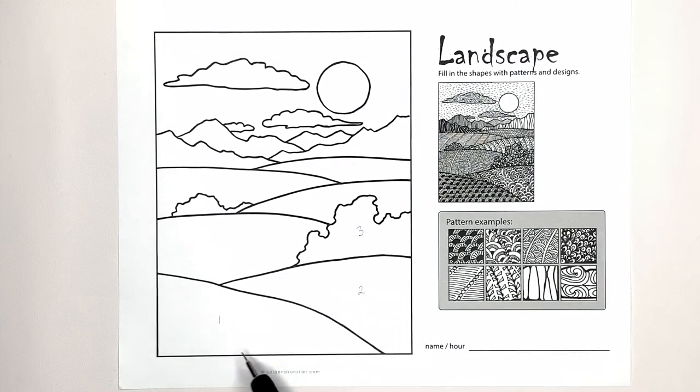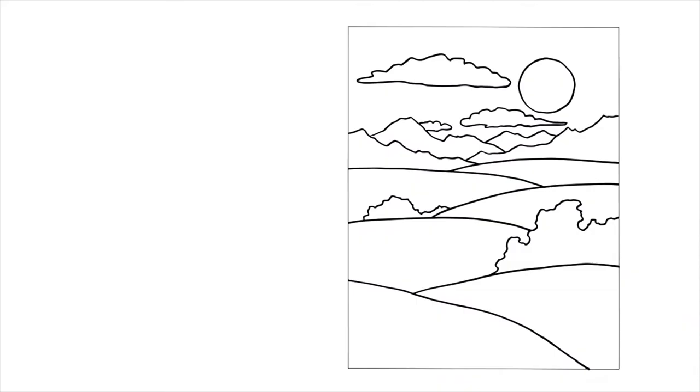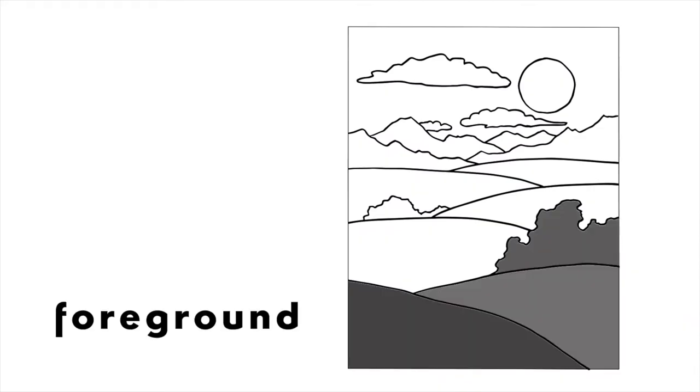Before we go crazy with patterns, we need to analyze the shapes that we are going to work with, pick the patterns, and create a plan. What we see is clearly a landscape with a foreground, a middle ground, and a background. And we have the sky, some clouds, and the sun. Each area will require different types of patterns.